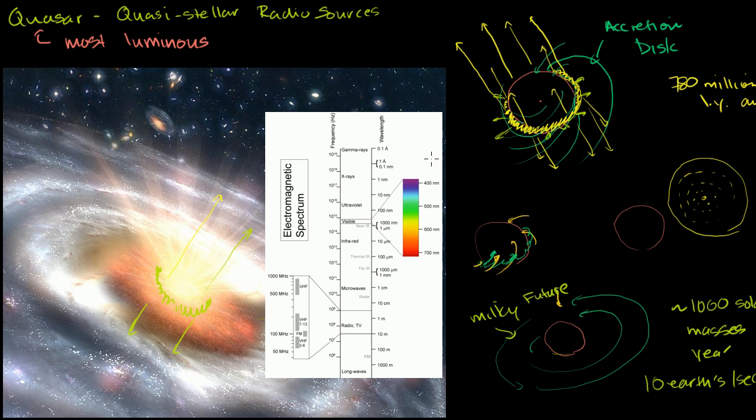Most quasars are actually emitting electromagnetic radiation across the spectrum, all the way from x-rays, as high frequency as x-rays, all the way down to infrared.